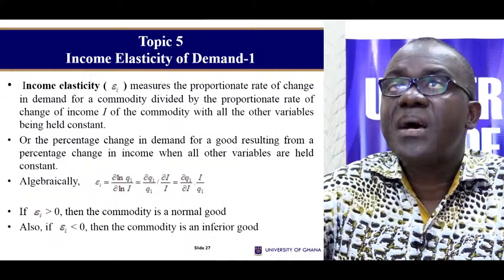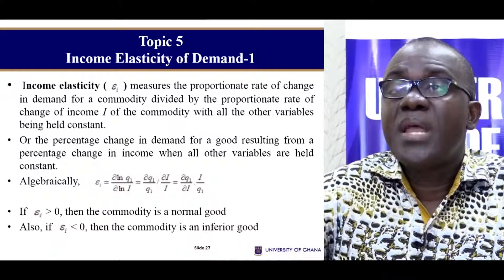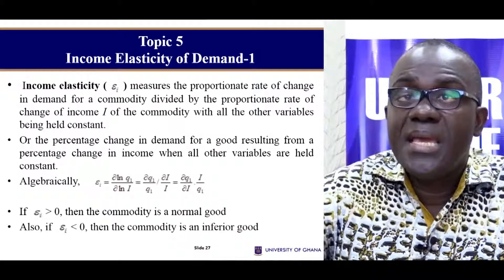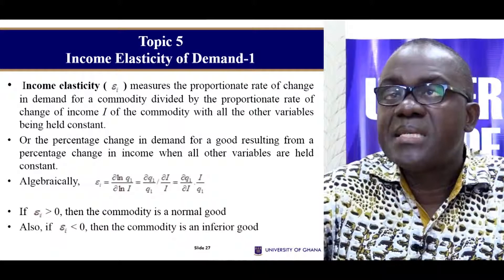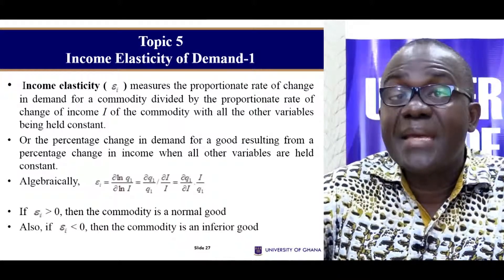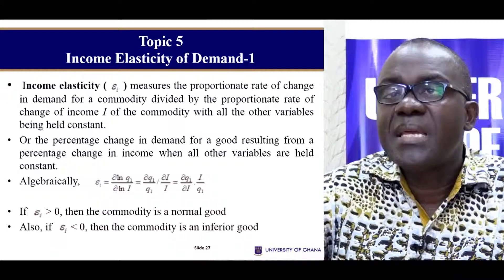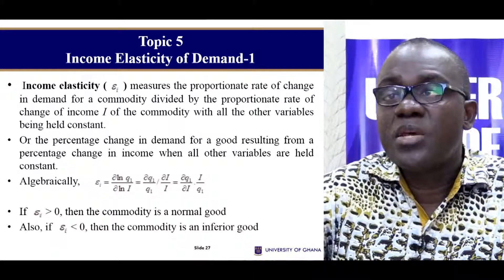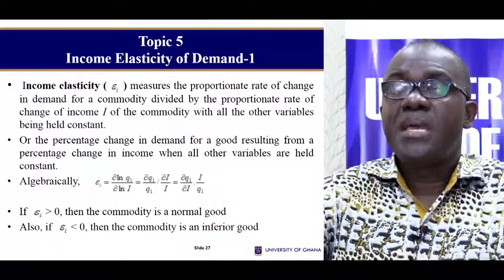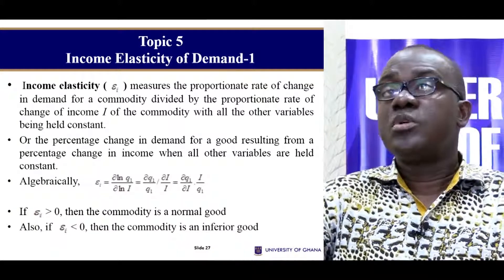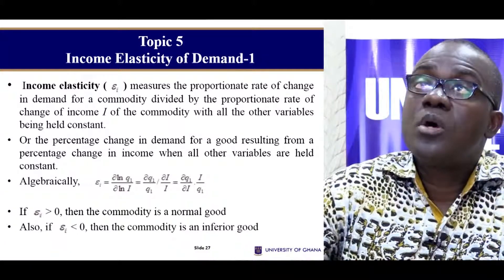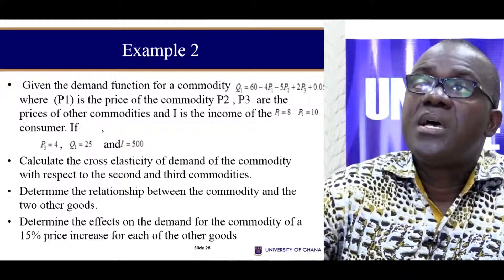The last elasticity is income elasticity of demand. Here we would like to see how demand for the commodity responds to a change in income. The same formula applies, and if we have income elasticity greater than zero, then we talk about a normal good; when it is less than zero, we have inferior goods. Income elasticity permits us to know whether a good is a normal good or an inferior good.